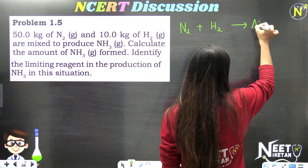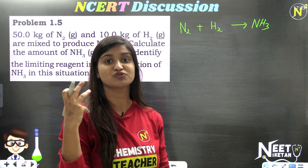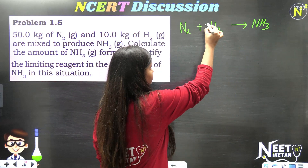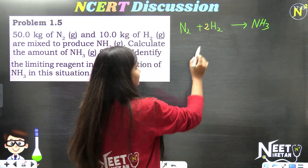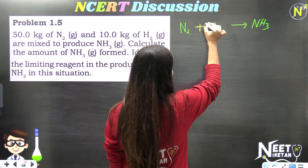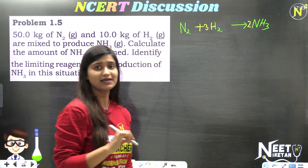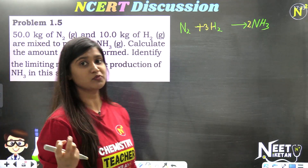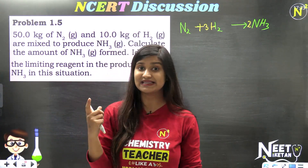Step 1: Write and balance the chemical equation. N2 + H2 → NH3. Balancing gives: N2 + 3H2 → 2NH3. The equation is balanced. Step 2: Convert amounts to moles. Convert kg to grams first — 1 kg = 1000 g.